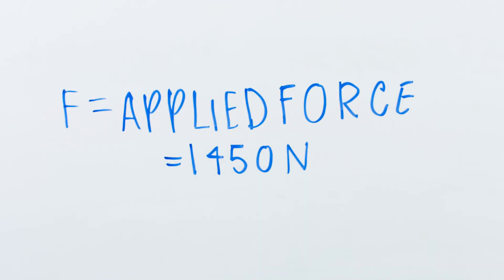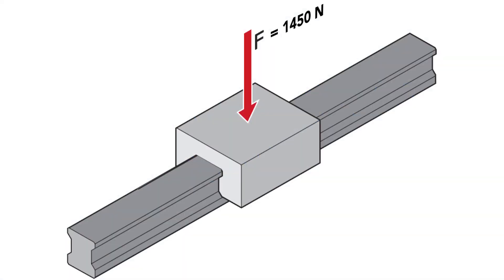Next, F is the applied load. In some cases, the applied load isn't straightforward, and it has to be calculated based on varying loads and combined force and moment loads. But here, we'll assume the applied load is a pure downward force on the center of the bearing block or carriage.